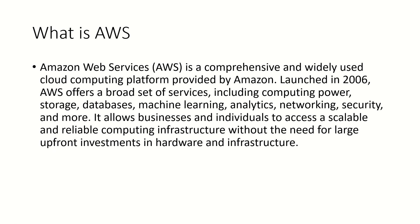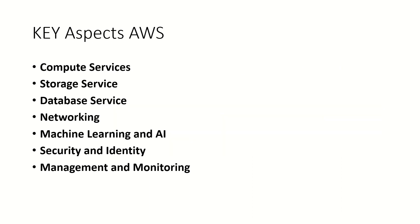Now let me go to the next slide and discuss about the key aspects or key services of AWS. Here I have listed out the key services that AWS provides: compute services, storage services, database service, networking, machine learning and AI, security and identity, and management and monitoring. Let me walk you through the AWS console and show you the services that AWS provides.